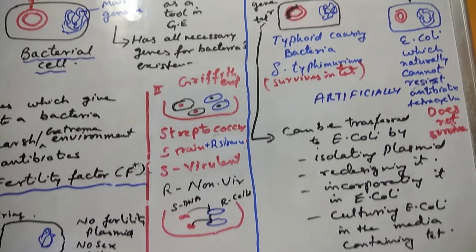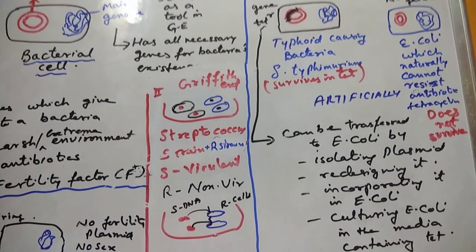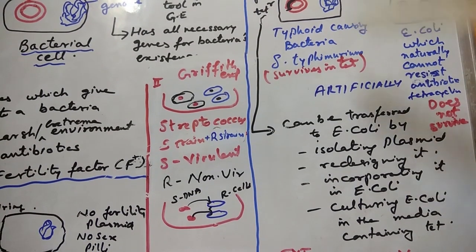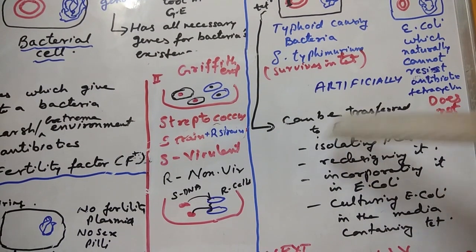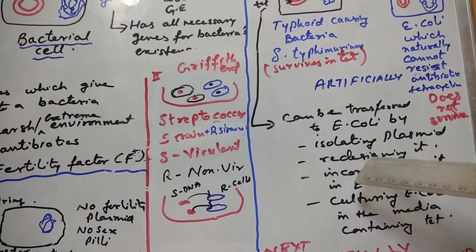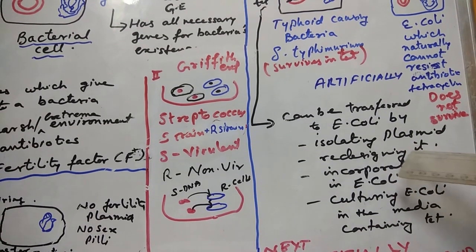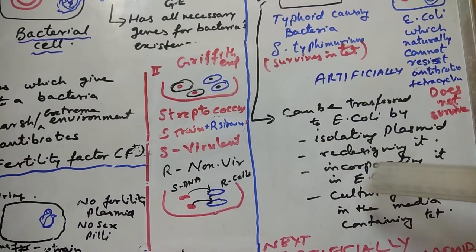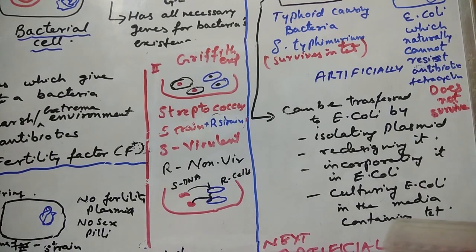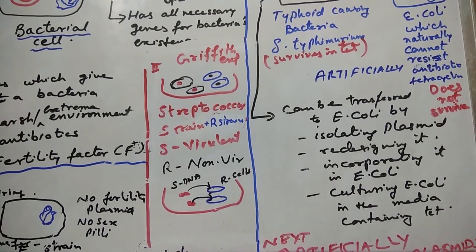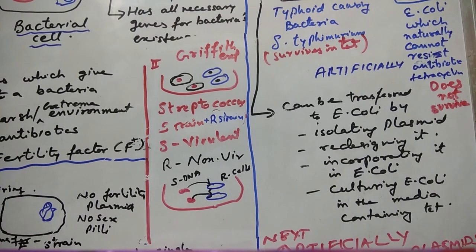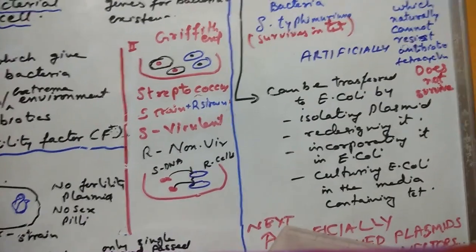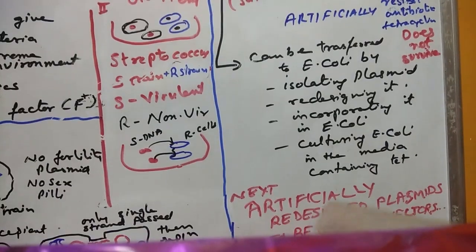To understand all those steps of how recombinant technology is done, we will discuss each step in detail in the next video. You have to isolate the tetracycline resistance gene, transfer it into E. coli by isolating its plasmid, redesign it by inserting this new piece of DNA having the gene for tetracycline resistance, then incorporate it in E. coli and culture E. coli in media containing tetracycline — and you will see that it doesn't die, it will survive, meaning E. coli gets resistance.